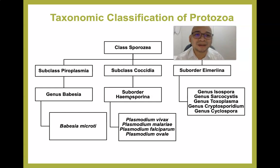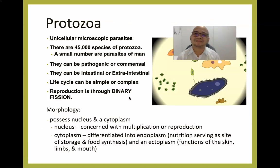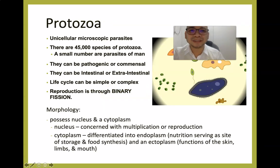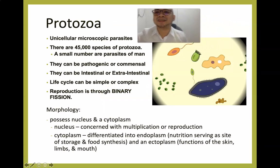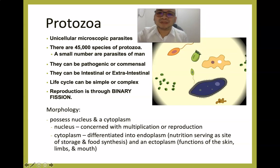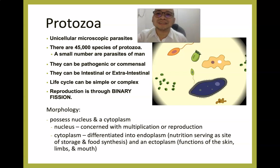Let us now discuss the general characteristics of protozoans. Protozoans are unicellular microscopic parasites. There are about 45,000 species of protozoans, and a small number are parasites of humans.